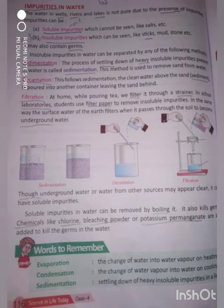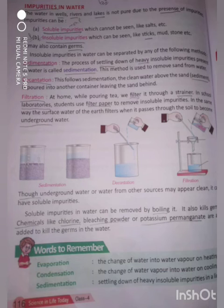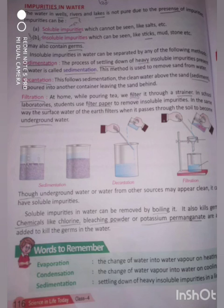Insoluble impurities in water can be separated by any of the following methods. Sedimentation: the process of settling down of heavy insoluble impurities present in water is called sedimentation; this method is used to remove sand from water. Decantation: this follows sedimentation — the clean water above the sand sediment is poured into another container leaving the sand behind. Filtration: at home while pouring tea we filter it through a strainer.